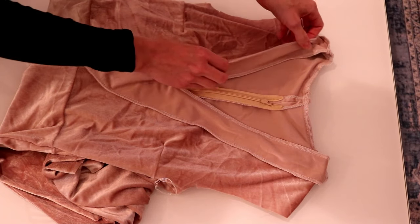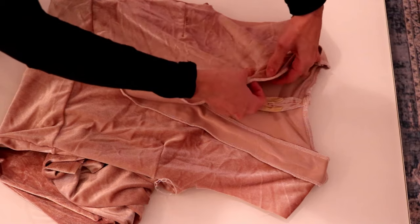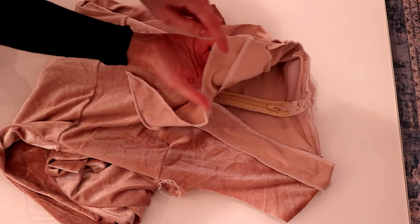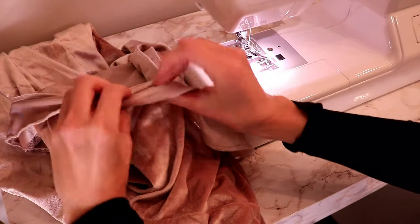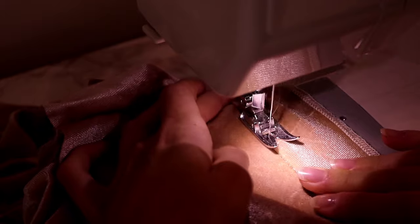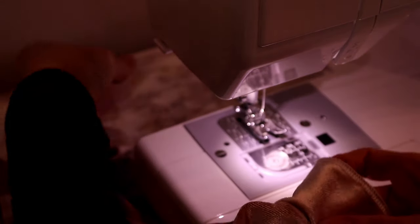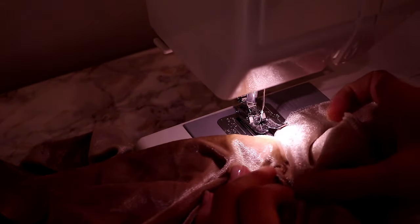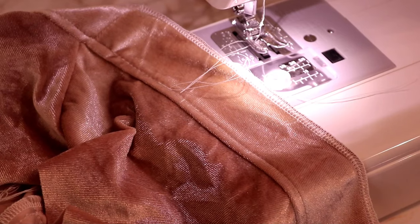Fold the facing toward the inside of the dress and understitch around the neck edge by stitching the facing into the seam allowance. Understitching is a technique that helps a facing stay neatly inside a garment. It's a row of stitches close to the seam line as shown here.